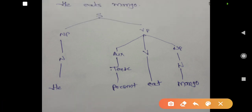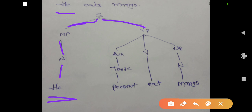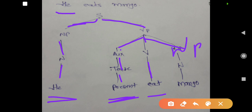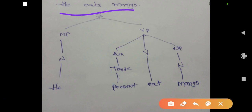'He eats mango.' This is a sentence. You divide it into two parts: noun phrase and verb phrase. In the noun phrase, 'he' is used as noun — NP is N and 'he.' For verb phrase 'eats mango': the main verb is 'eat,' the tense is present, and 'mango' is a noun phrase — NP is N 'mango.' This way you identify and segregate the constituents in the sentence 'He eats mango.'